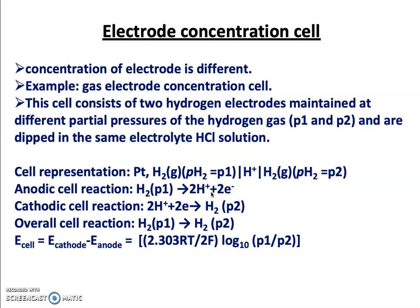The electrolyte is the HCl solution. This cell consists of two hydrogen electrodes — the design is the same as that of the SHE, the standard hydrogen electrode. Both anode and cathode are hydrogen electrodes maintained at different partial pressures P1 and P2, and both electrodes are dipped in the same HCl electrolyte solution.